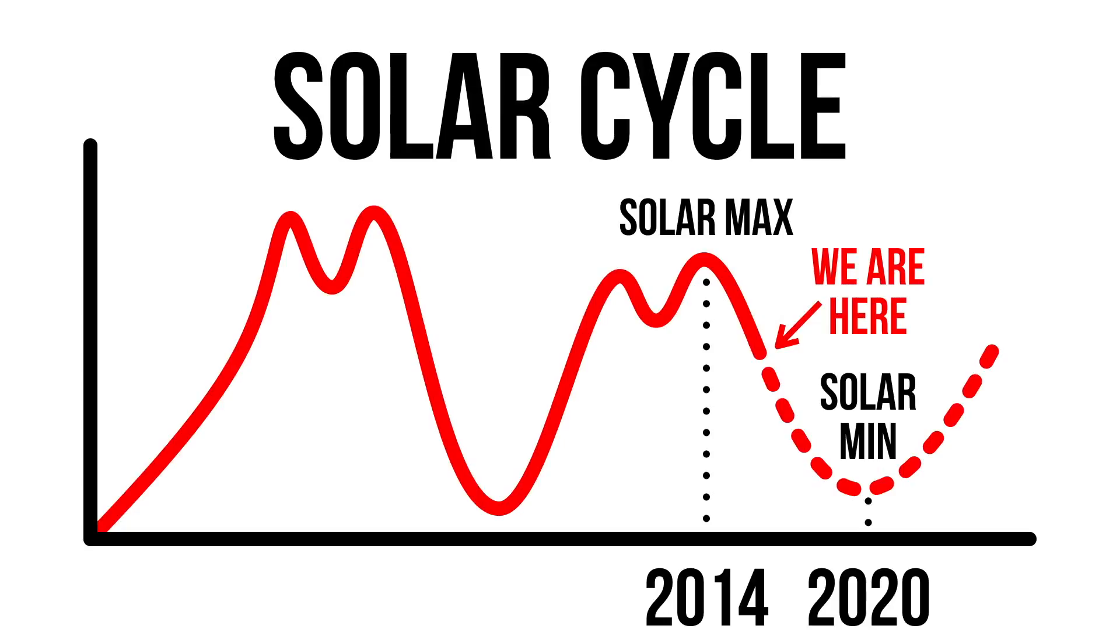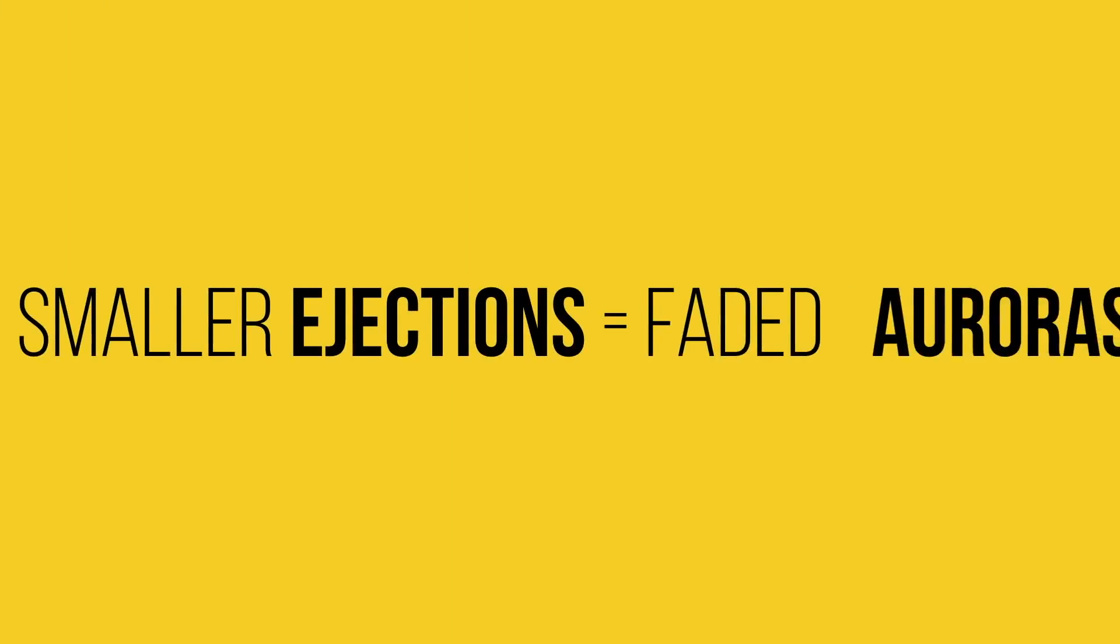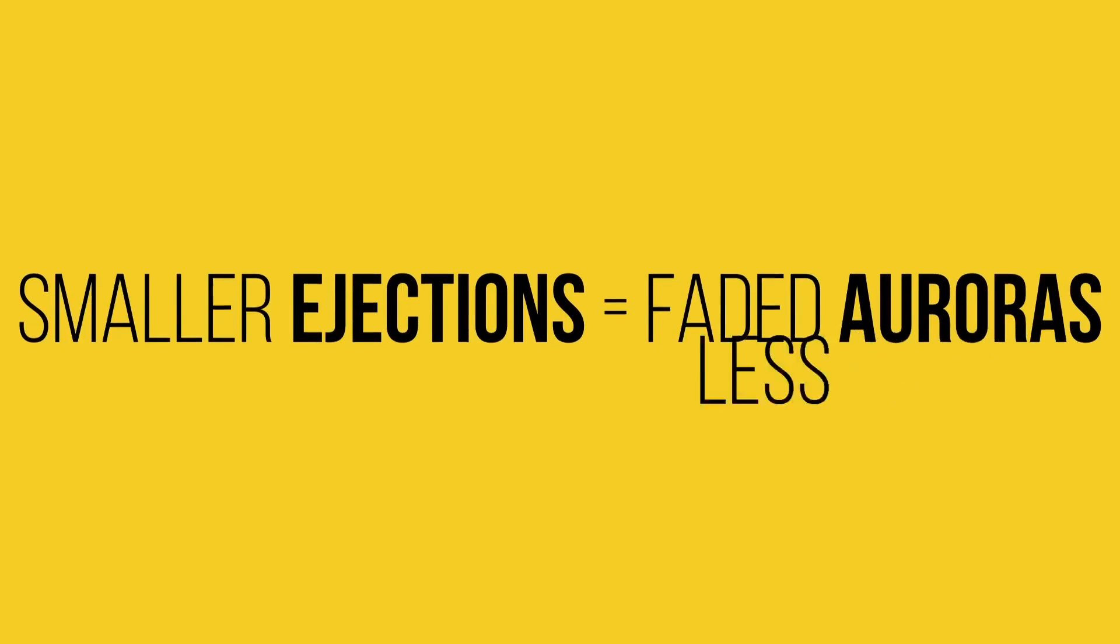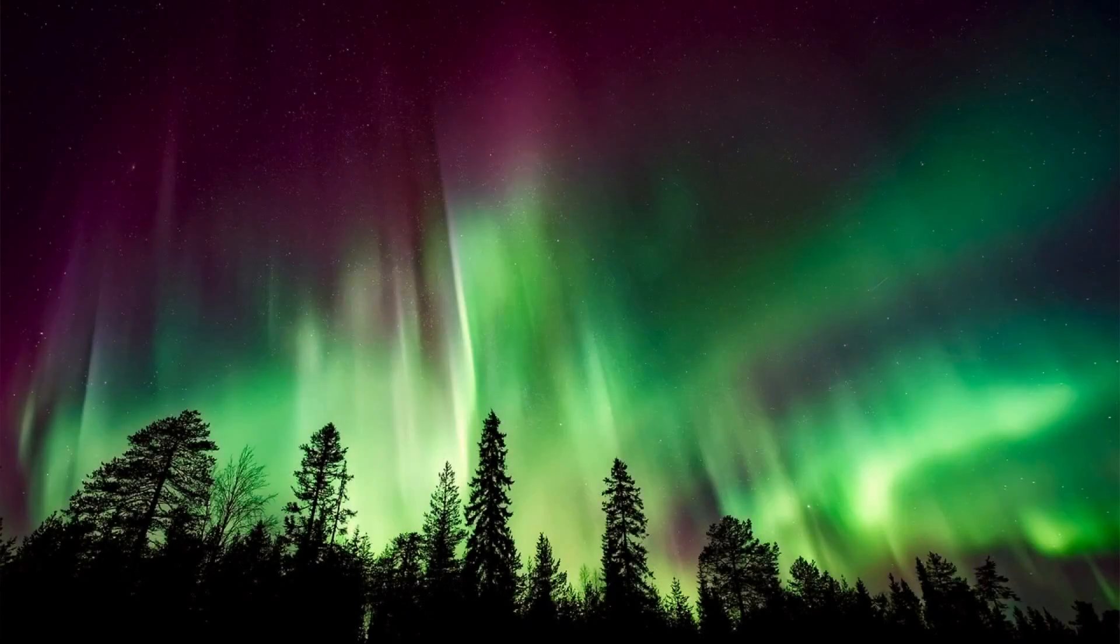Less sun activity means smaller coronal mass ejections, and less of them as well. Smaller ejections means less energy is being transferred to oxygen and nitrogen in our atmosphere, leading to less vibrant, more faded auroras. And having less ejections in the first place means less auroras are appearing. And that's why the northern lights are fading away.